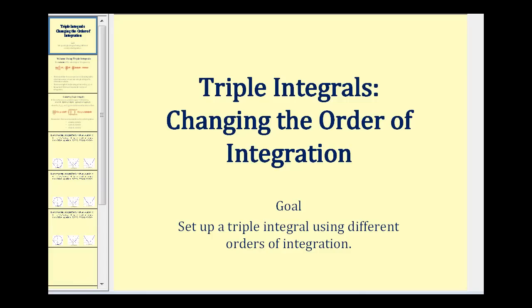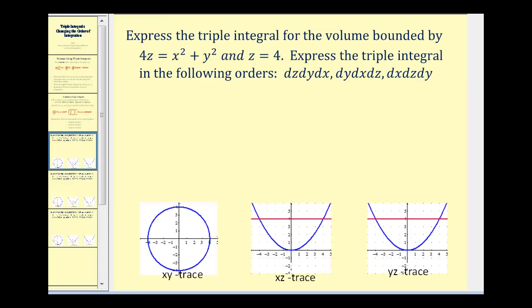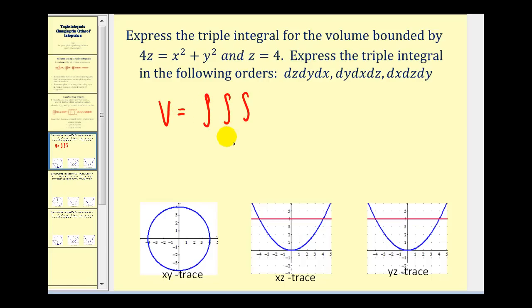Welcome to a lesson on changing the order of integration using triple integrals. Here we want to express the triple integral for the volume bounded by four z equals x squared plus y squared and z equals four. We want to express the triple integral using three different orders of integration. We can determine the volume of a solid region using a triple integral evaluated over the three-dimensional region V, integrated with respect to V.